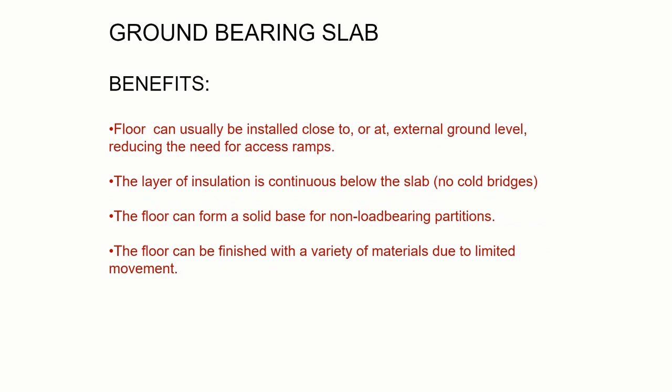The benefits of a ground bearing slab are that because we don't need a space underneath it, we can install it pretty much at external ground level. This is useful for accessibility — ramps, people in wheelchairs, elderly homes — it means they can get into their house without having to negotiate steps or ramps. We can also put a continuous layer of insulation below the slab.